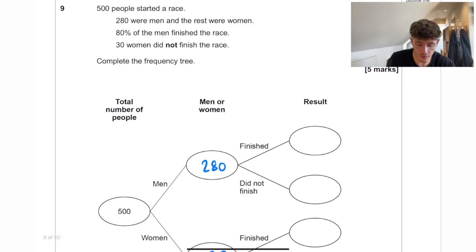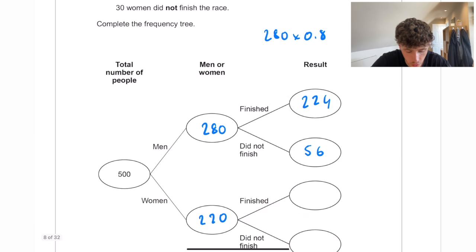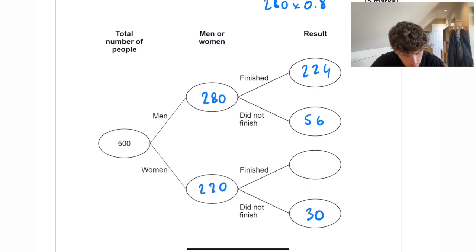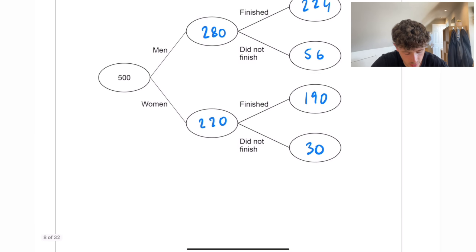80% of the men finished the race. So if we do 280 times by 0.8, that gets us 224. Which means that 56 did not finish the race. And then 30% of women did not finish the race. So that must mean 190 did finish the race.